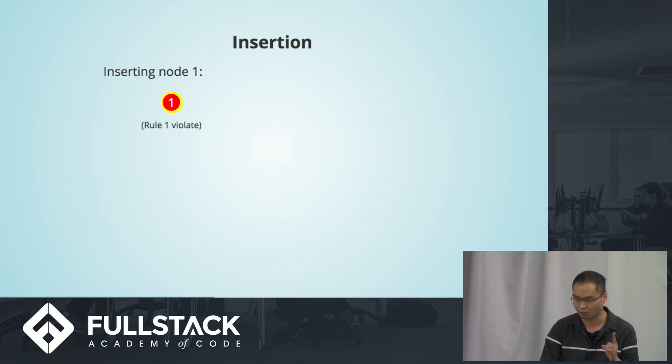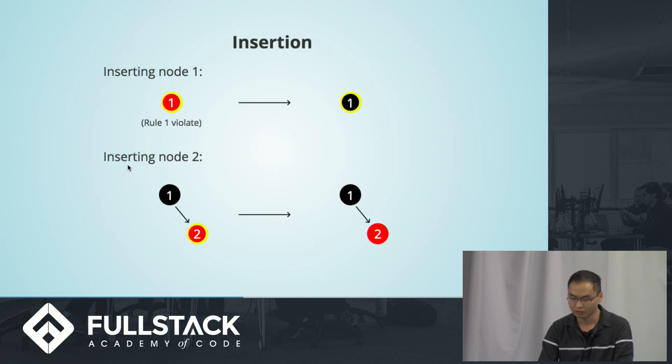When you insert node 1, it's red. But if you have one node, you always need to make the root node to be black. The next one is also very cheap. If you want to insert node 2 here, this is automatically valid. So this one is a red-black tree.